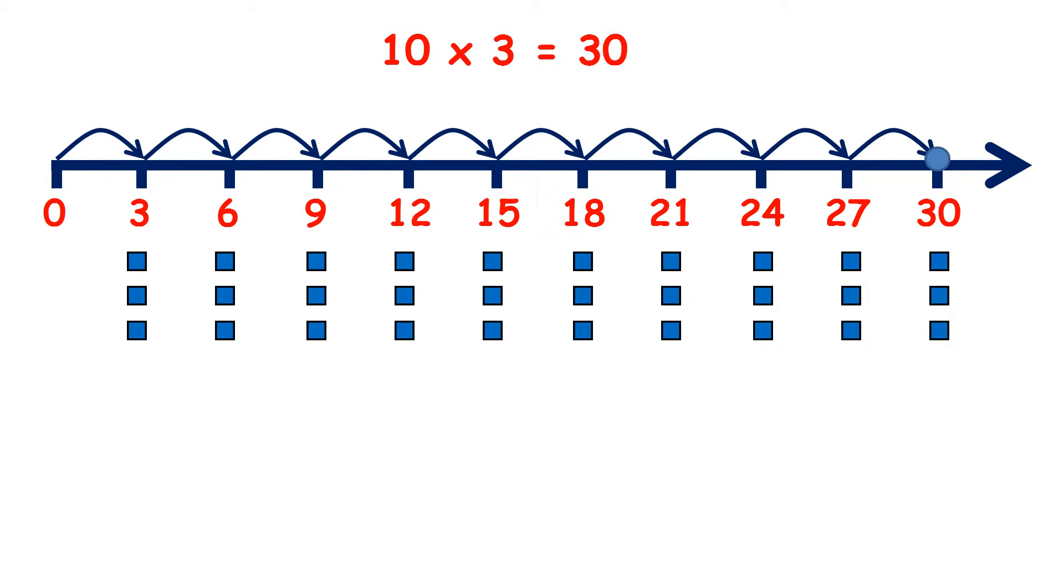And 10 times 3 is 30. So we have 10 groups of 3, we have 30.